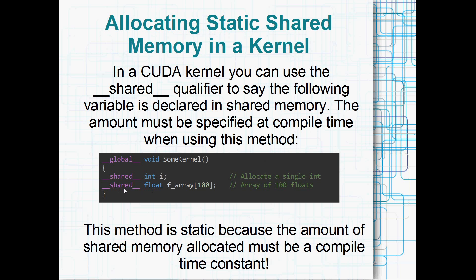So something like __shared__ float F_array[100]. But the important thing about this static allocation of shared memory is that the 100 just here, or whatever number it happens to be, has to be a constant, compile time constant.